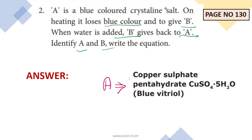The blue colored crystalline salt is Copper Sulphate Pentahydrate. So A is Copper Sulphate Pentahydrate, with the chemical formula CuSO₄·5H₂O — that is, copper sulphate with 5 water molecules. This compound is also known as Blue Vitriol.